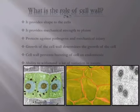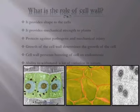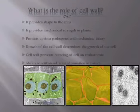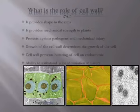Now what is the role of cell wall? It provides shape to cells — so that it will be square or ovoid — in the shape of the cell wall. It also provides mechanical strength to plants and protects against pathogens and mechanical injuries.